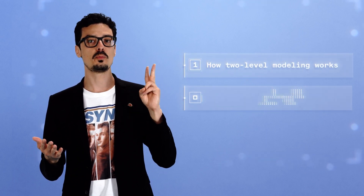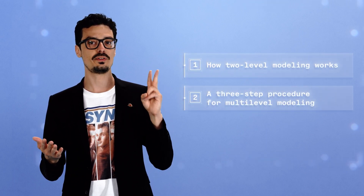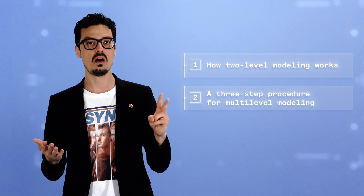Multiple models, also referred to as mixed models or random coefficient models, are used to analyze data that have a nested structure, such as participants nested in schools, regions, or countries. The purpose of this video is twofold: to help you understand how two-level modeling works, and to provide a three-step procedure for performing this type of analysis using Stata, R, SPSS, or M+.